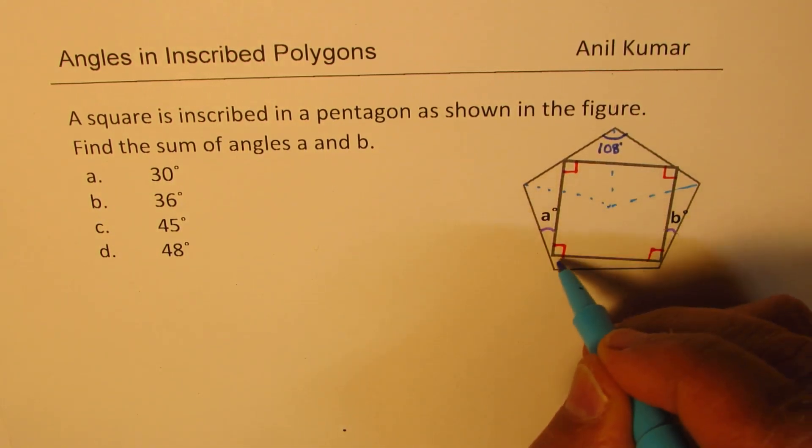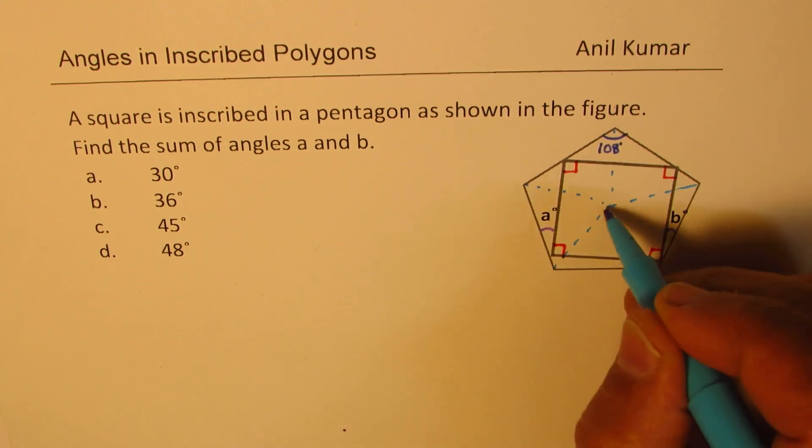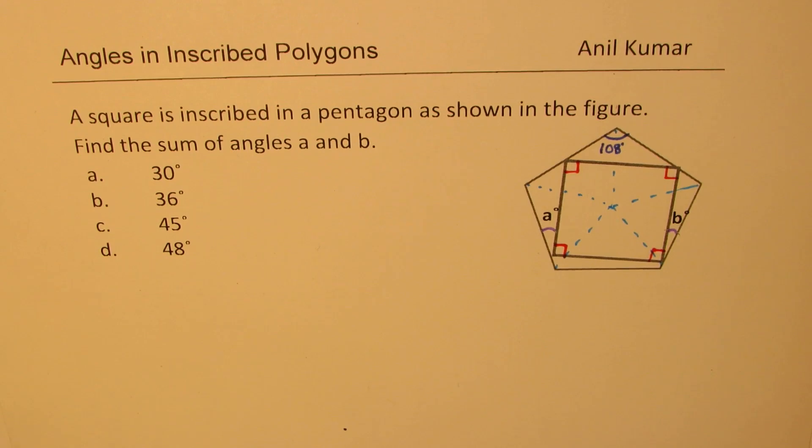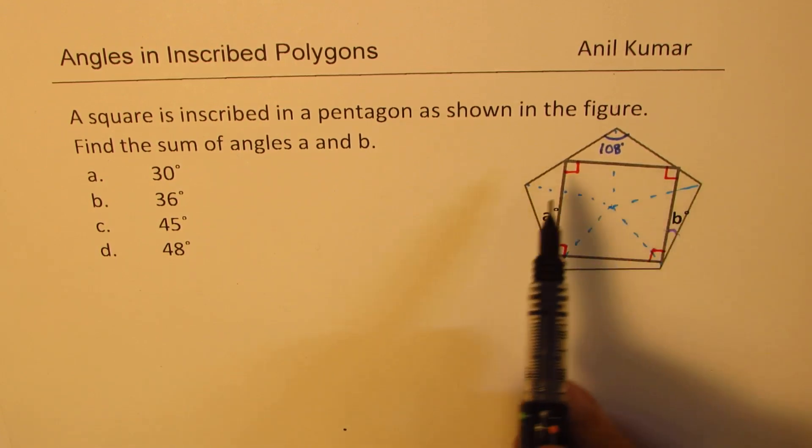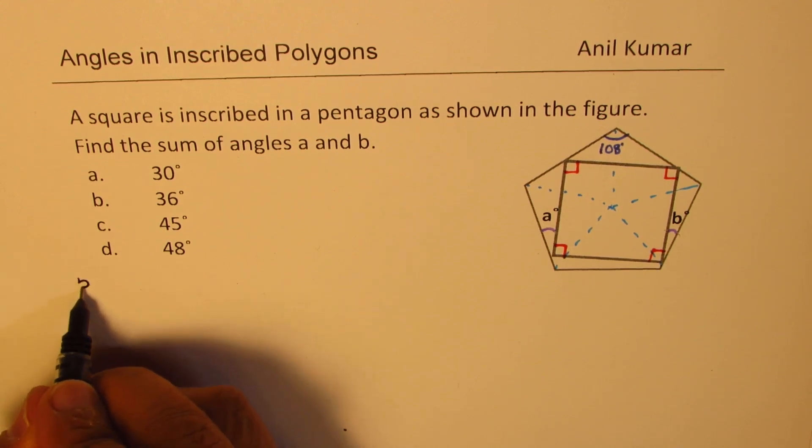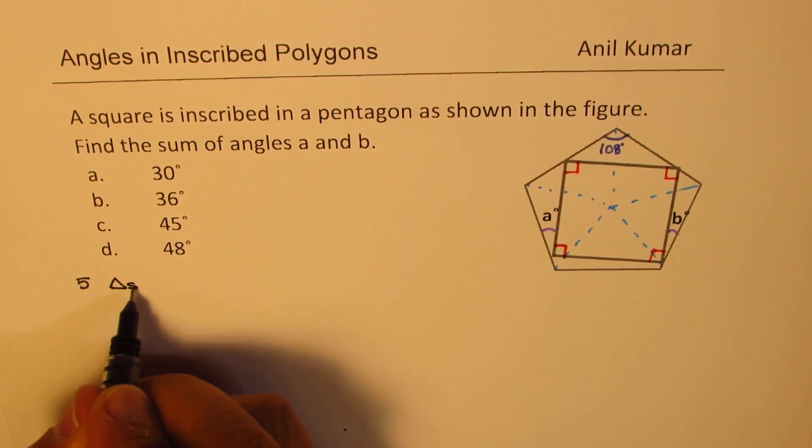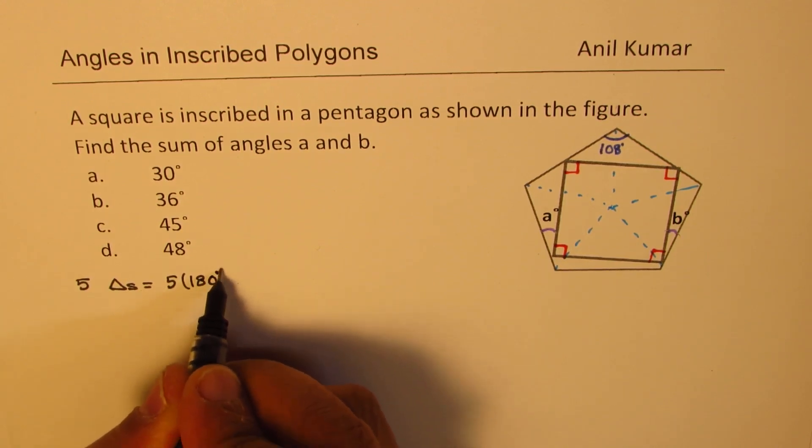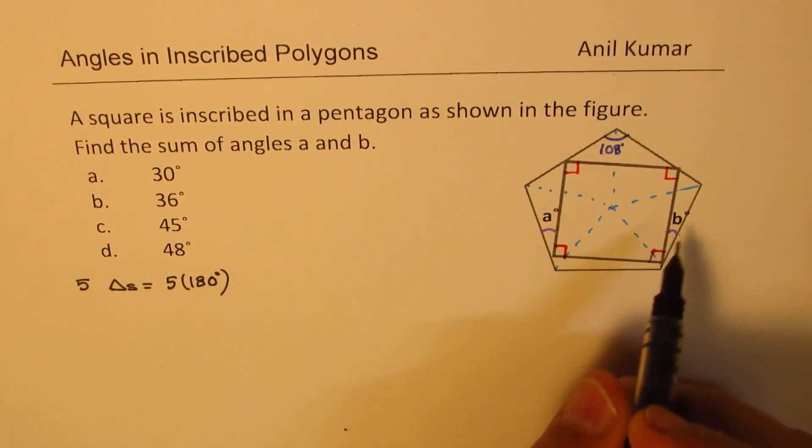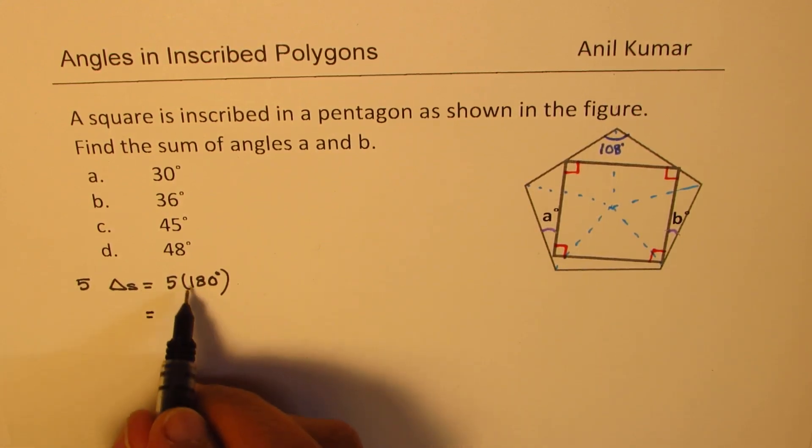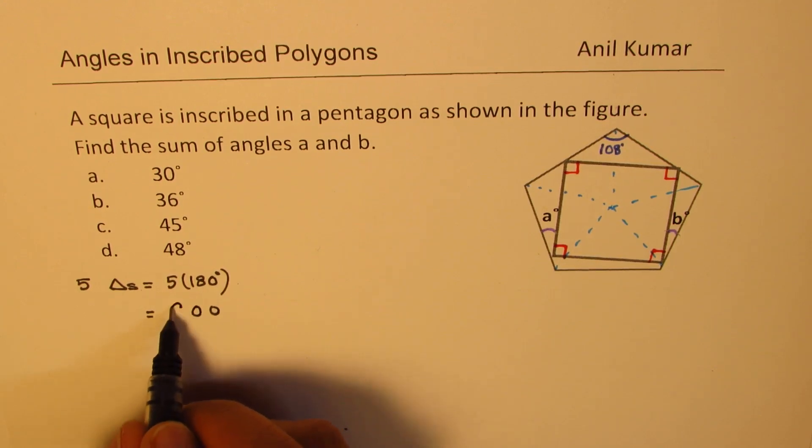So if you know it's 108 degrees, you can skip this part. A pentagon basically will have five triangles. Now we're talking about regular pentagons. These are five triangles, so the total is 5 times 180 degrees. So that is the total angle, which is equal to 900 degrees.